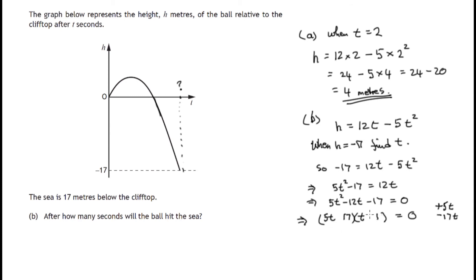So this is telling us that the 5t, the 1 times the 5t, has to be positive and the 17t has to be negative. So we've got 5t minus 17 times t plus 1 as the two factors.